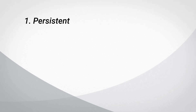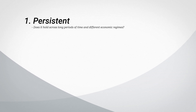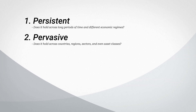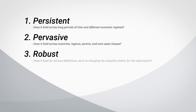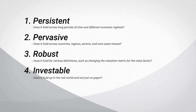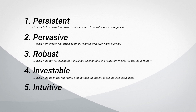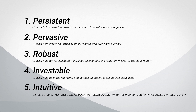In the book 'Your Complete Guide to Factor-Based Investing,' Larry Swedroe and Andrew Berkin construct a wonderful framework to come up with a list of factors that are not just significant but have either economic or behavioral reasoning backing them up, so that they have the potential to continue working in the future. To come up with this list, Swedroe and Berkin ask the following from each factor: 1. Is it persistent — does it hold across long periods of time and different economic regimes? 2. Is it pervasive — does it hold across countries, regions, sectors, and even asset classes? 3. Is it robust — does it hold for various definitions, such as changing the valuation metric for the value factor? 4. Is it investable — does it hold up in the real world and not just on paper? And 5. Is it intuitive — is there a logical risk-based or behavioral-based explanation for the premium and for why it should continue to exist?